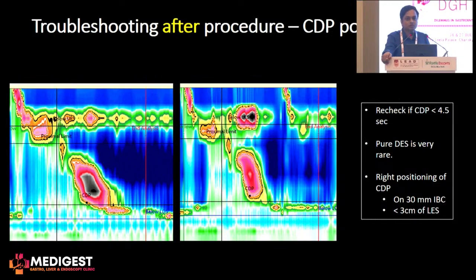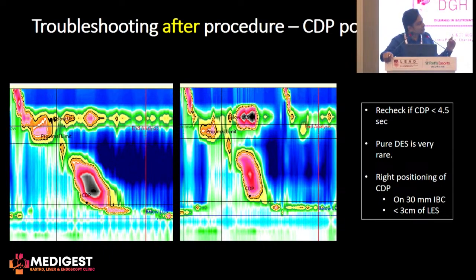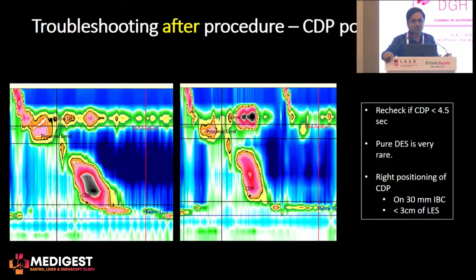Positioning of the contractile deceleration point (CDP) is again very important. If the distal latency appears less than 4.5 seconds, bear in mind that a very low distal latency is extremely uncommon as an isolated disorder. When you see a low distal latency, make sure you have placed the CDP correctly. The CDP must be set on the isobaric contour of 30 mmHg and is almost always within 3 centimeters of the lower esophageal sphincter.